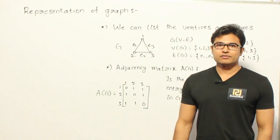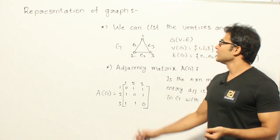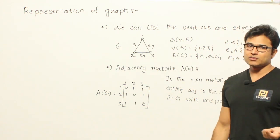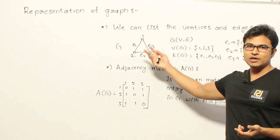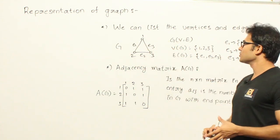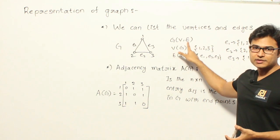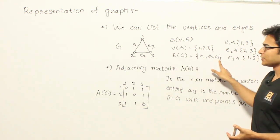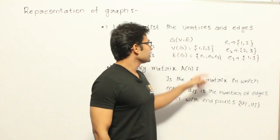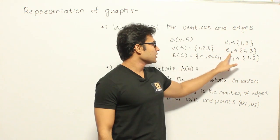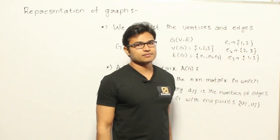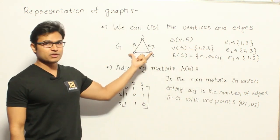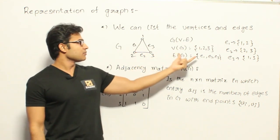Now let's see how to represent a graph. One way is to list all the vertices and edges. If the graph has vertices 1, 2, 3 and edges E1, E2, E3, you can describe each edge: E1 is between 1 and 2, E2 is between 2 and 3, and E3 is between 1 and 3. This description is enough — you need not always draw a diagram.